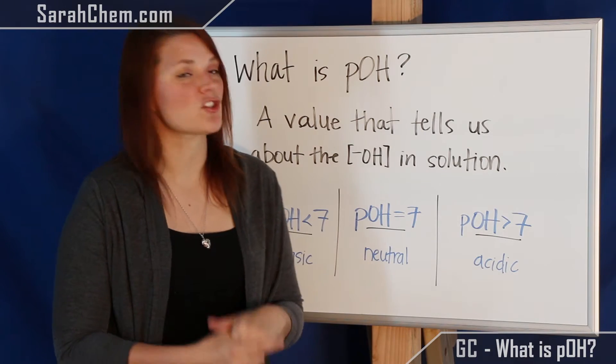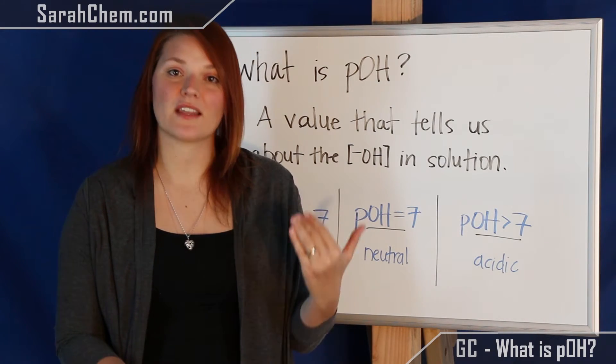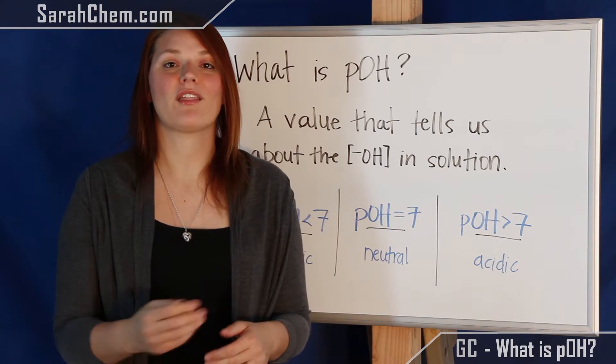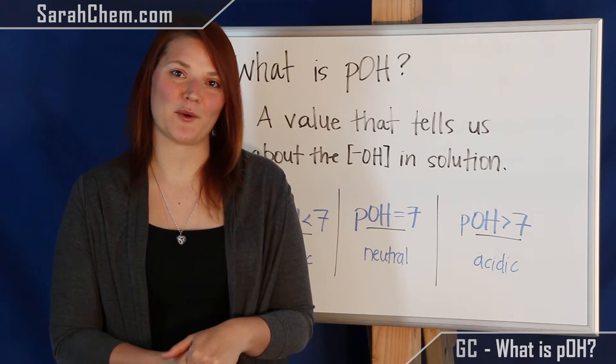Lastly, if we have a pOH greater than 7, we now have an acidic solution, which would mean we have more H+ in solution than hydroxide. And those are some of the basics about pOH.